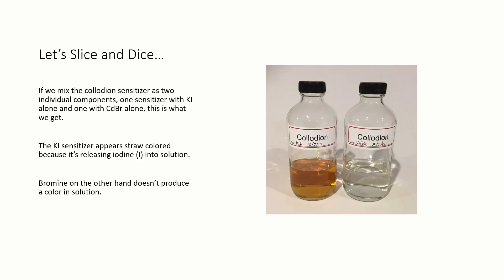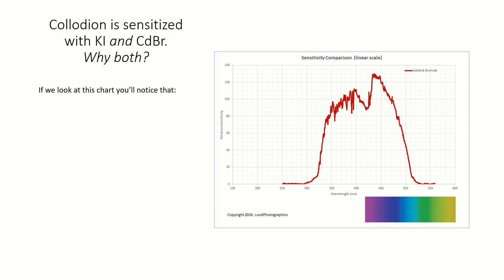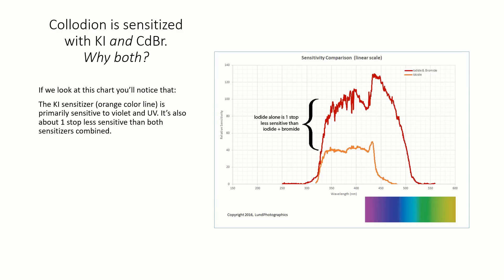Okay, but why do I have to use a bromide and an iodide in my collodion? Why not one or the other? Here, the red profile is collodion that uses both iodide and bromide. Notice that the iodide alone is about one stop less sensitive than the combination, and that it's sensitive primarily to blue, violet, and UV.